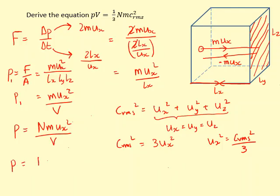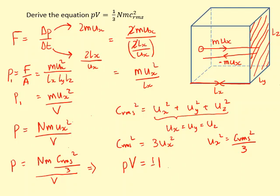Substituting back into the equation: P equals Nm times crms² over 3, all divided by V. This simplifies to the equation we've been trying to derive: PV equals one-third Nmcrms².